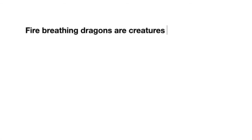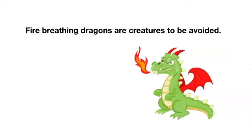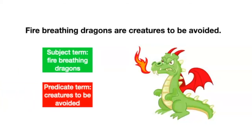The subject term and the predicate term are not always single words. In many cases, a whole phrase will function as one or the other. For instance, 'fire-breathing dragons are creatures to be avoided.' In this case, fire-breathing dragons is the subject term and creatures to be avoided is the predicate term.